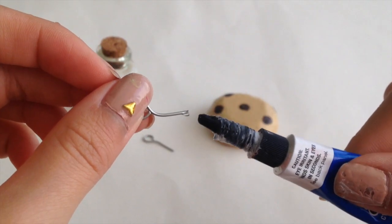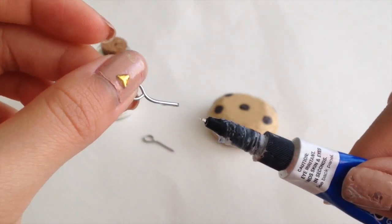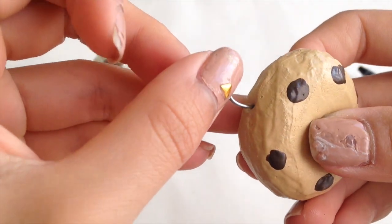This is very simple. First I am going to cover the eye pin with some super glue and just insert it in the cookie.